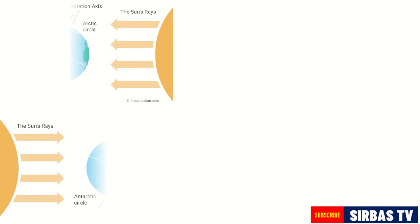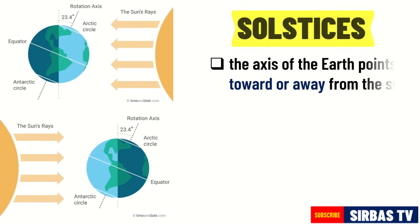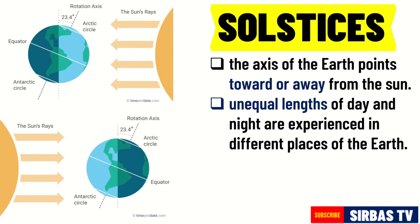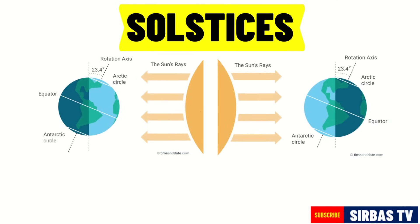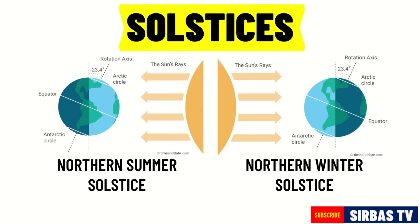When the axis of the Earth points toward or away from the sun, solstices occur. During solstices, unequal lengths of days and nights are experienced in different places of the Earth. The first day of summer is marked by the summer solstice, which occurs during June 21 or 22. And the first day of winter is marked by the winter solstice, which occurs during December 21 or 22.